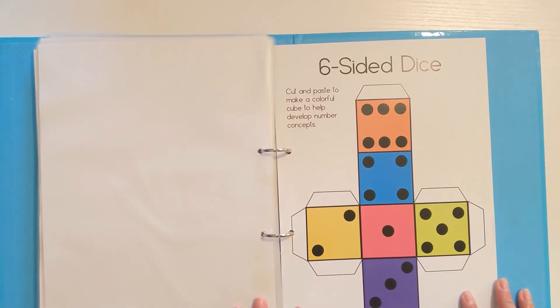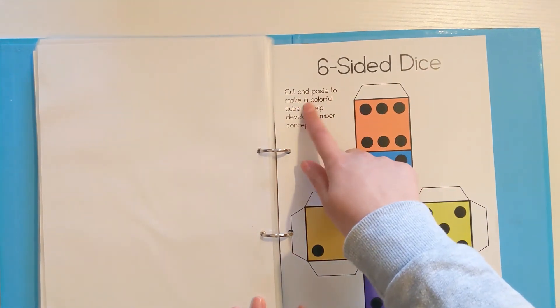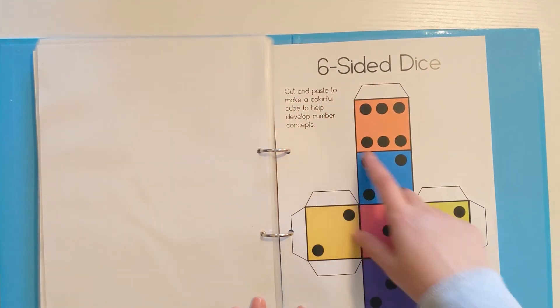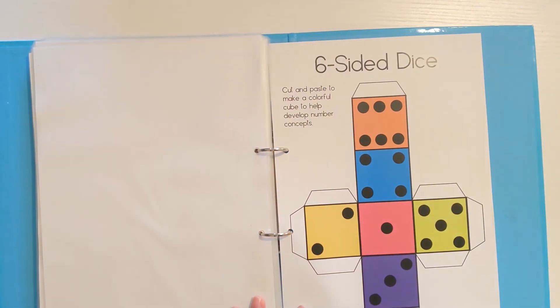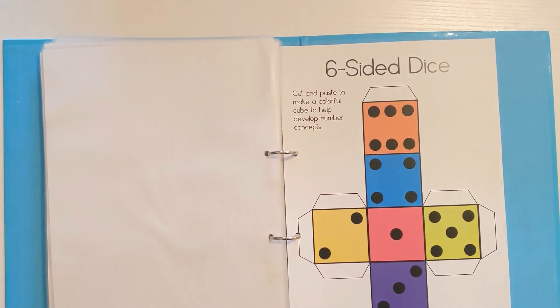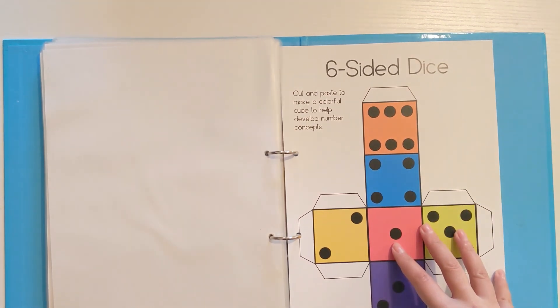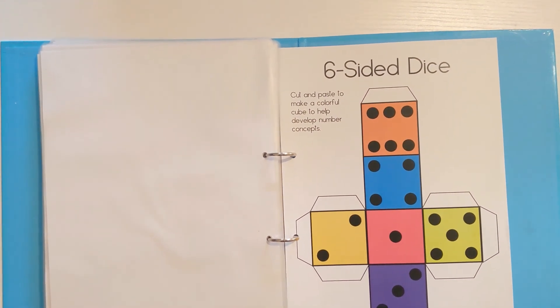Now the last sheet that I've created for her is a six-sided dice. This is where she'll have to cut and paste with my help to make a colorful cube to help develop number concepts. All I'm going to do is cut it out for her, get her to fold the dice. Then there are lots of board games. We've got lots of board games at home. You can even find some online if you haven't got any where you use the dice. It's just cementing that idea in their minds that one actually means number one, two means two. This is just another fun way to do that.